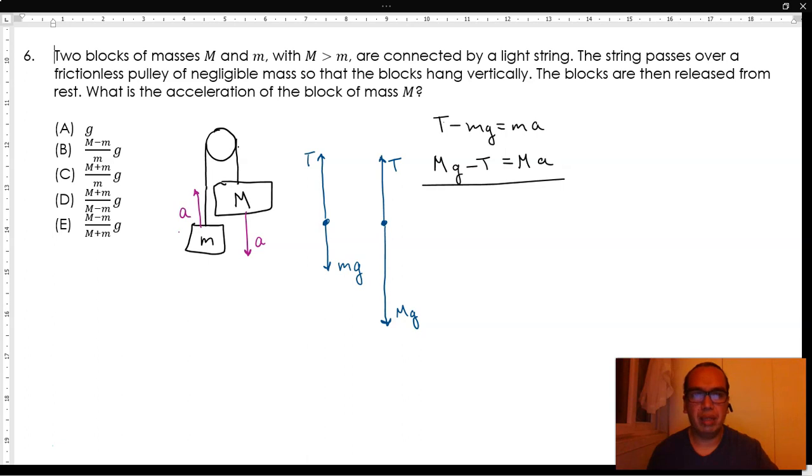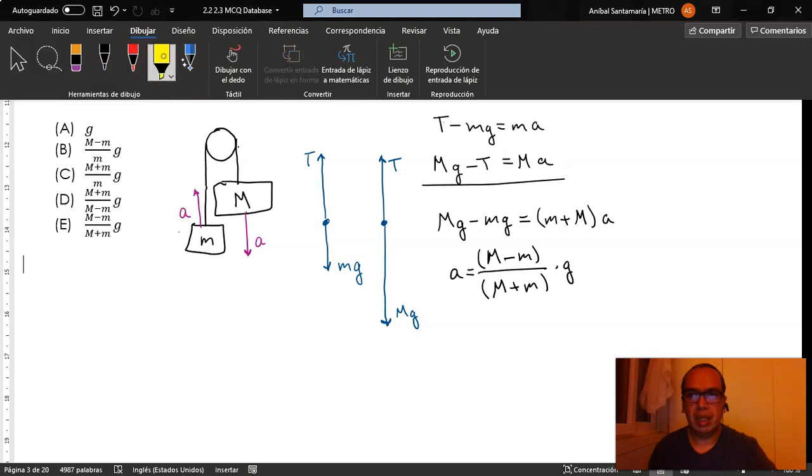If we use elimination in these equations, we have capital Mg minus lowercase mg is equal to m plus big M times the acceleration. The acceleration is then capital M minus lowercase m divided by capital M plus lowercase m times g, and that is option E.